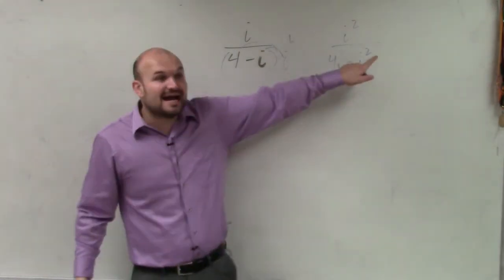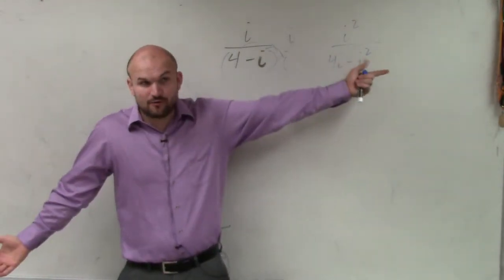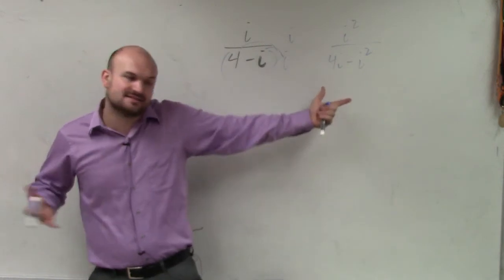The problem with this is, yes, the i gives you i squared, which goes to negative 1, but we still have a 4i, so we still have an i in the denominator.